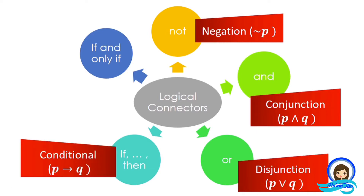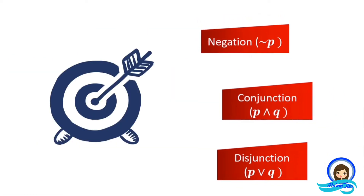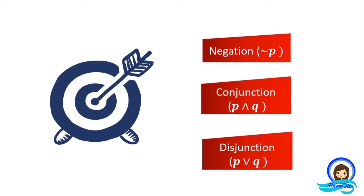We also have the conditional proposition, read as P implies Q, or the if-then statement. And finally, the biconditional proposition, represented by the symbol P if and only if Q. Today, we will focus on the negation, conjunction, and disjunction of propositions — determining the truth values of these three logical operators. Let's start.